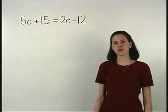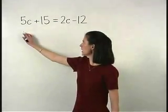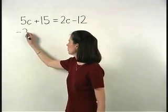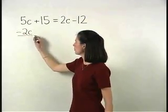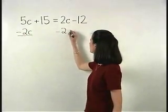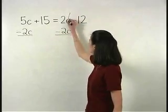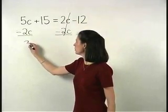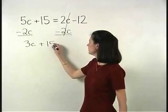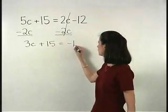So let's put our c terms together on the left side of the equation by subtracting 2c from both sides. And we have 3c plus 15 equals negative 12.